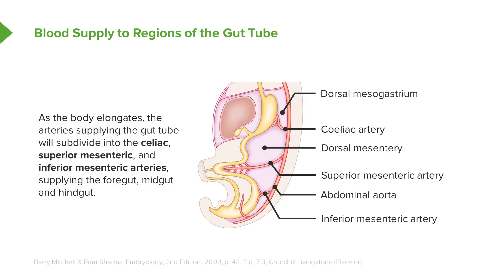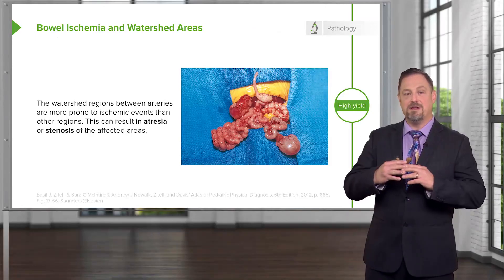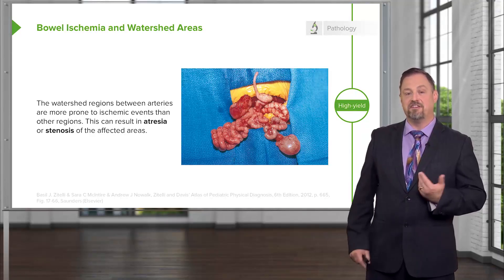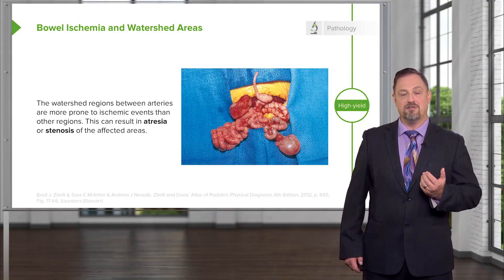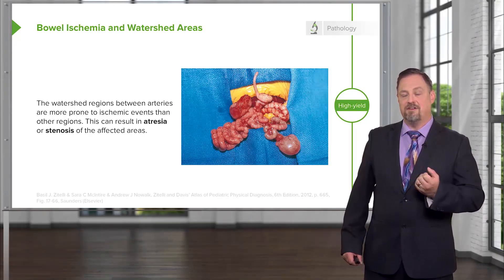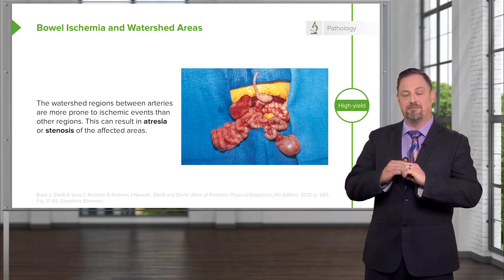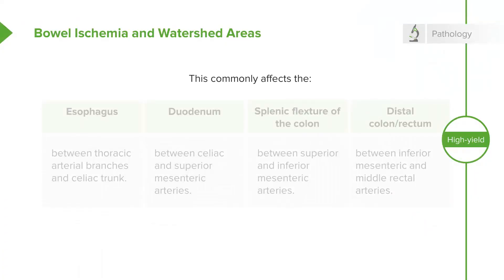So we have three separate arteries supplying three separate but continuous portions of the gut tube. Because we have three separate blood supplies, the points where those arteries meet form watershed regions, which are more prone to ischemic events than other places. An ischemic event would be an interruption in the blood and therefore oxygen supply to tissues, and can cause the gut tube to become narrowed — causing atresia if it's completely narrowed and blocked off, or simple stenosis if it's only narrowed and just has a difficult time passing food from one area to the next. Watershed areas occur where we have two separate blood supplies meeting.